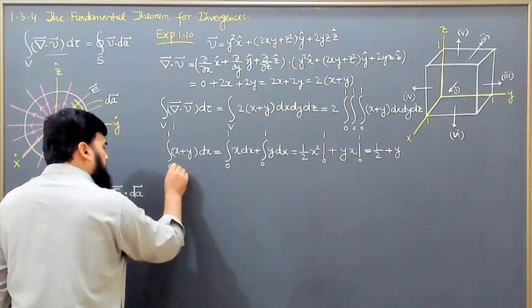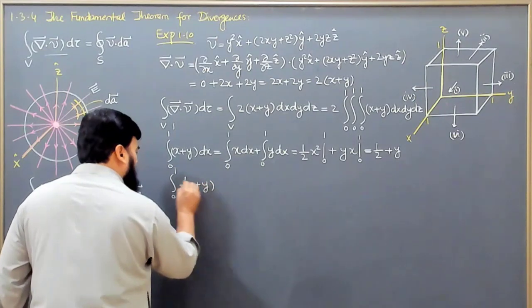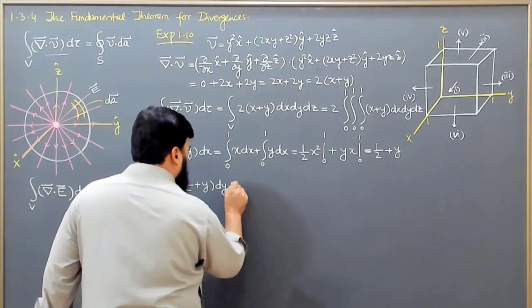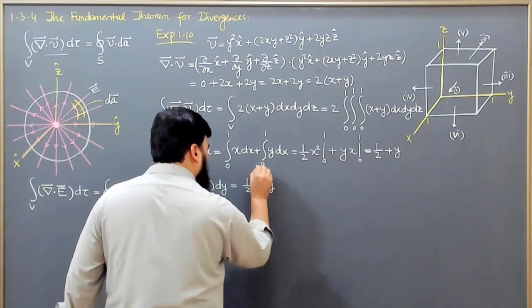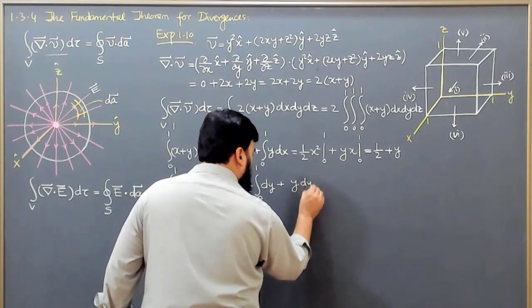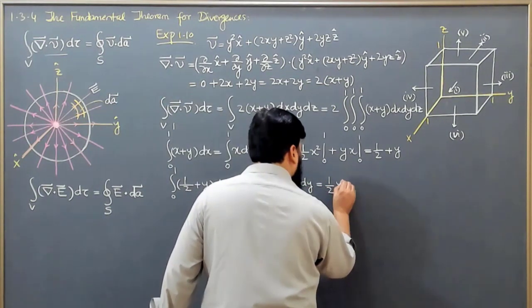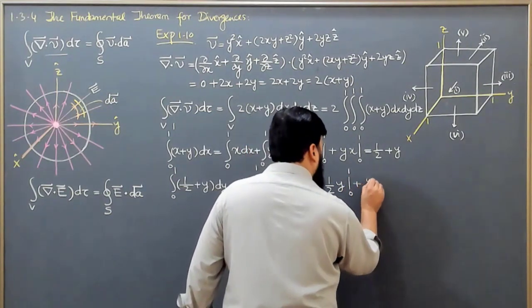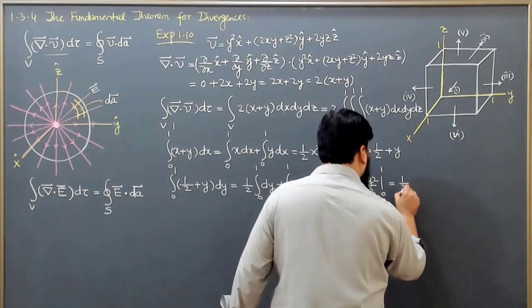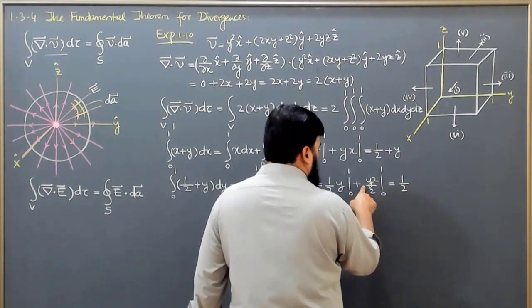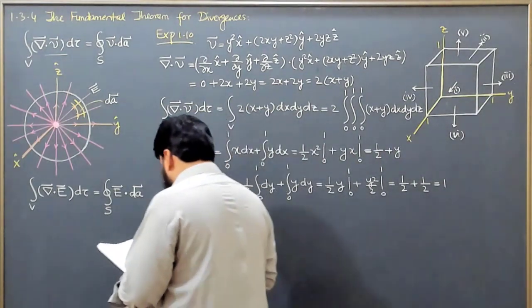The next integral runs from 0 to 1, with y also running from 0 to 1, giving us (1/2 + y) dy. This equals (1/2)∫dy from 0 to 1 plus ∫y dy from 0 to 1, which gives (1/2)·y evaluated from 0 to 1, plus y²/2 from 0 to 1. This equals 1/2 plus 1/2, which equals 1, so this integral gives us 1.